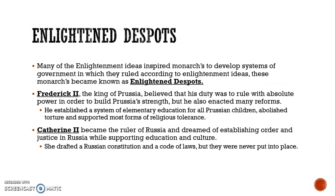Many Enlightenment ideas inspired monarchs to develop systems of government in which they ruled according to Enlightenment principles. These monarchs became known as Enlightened despots. Frederick II, king of Prussia, believed his duty was to rule as an absolute monarch to build Prussia's strength, but he also enacted reforms: establishing a system of education for all Prussian children, abolishing torture, and supporting religious tolerance. Catherine II of Russia dreamed of establishing order and justice while supporting education and culture. She drafted a Russian constitution and code of laws, though they were never put into place, and continued some of the educational reforms begun by Peter the Great.